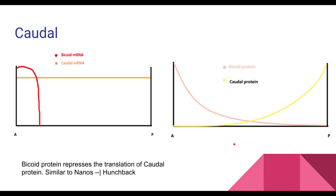The last gene we're going to talk about is caudal. Caudal and bicoid share a relationship that mirrors the relationship between nanos and hunchback. Caudal mRNA actually has quite a consistent level throughout the embryo — it's the orange line on the graph. Bicoid mRNA, shown in red, sharply drops off as soon as we move away from the anterior portion, because of localization via anchor proteins.